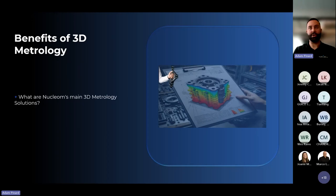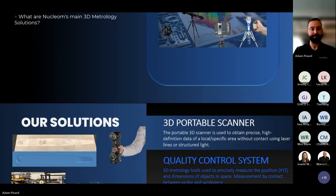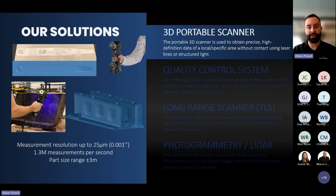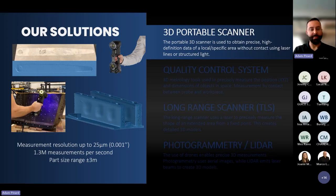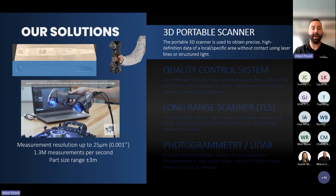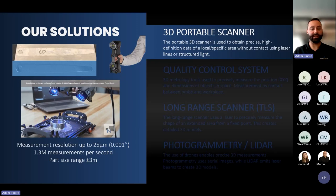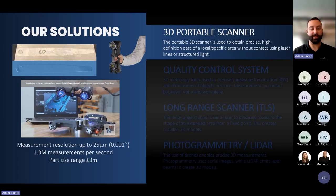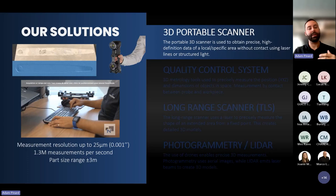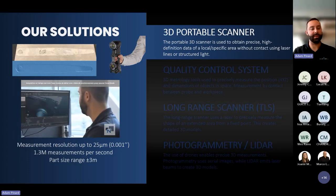The metrology solutions we use at Nucleum include, most notably, the portable scanner such as the ND scan. The measurement resolution — the level of detail it can capture — can go up to a thousandth of an inch, and even half of that: 12.5 microns with the latest technology model. The measurement rate is about 1.5 million measurements per second. You get the 3D scan by placing positioning targets on the part, which are black and white dots that help the scanner position itself and capture in real time the 3D model you can take measurements from on your computer.